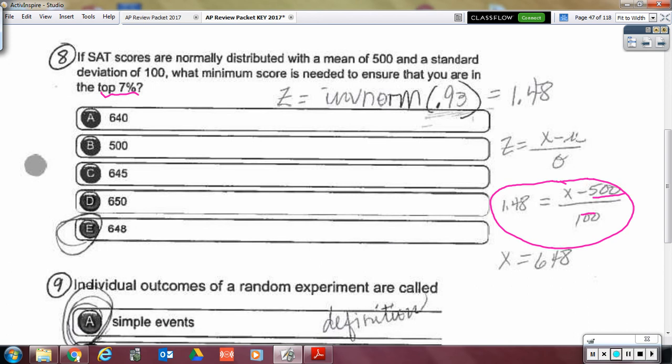Number eight, top 7%. Do we ever get our Z score by, if I did inverse norm of 0.07? That's the bottom 7%. So it is inverse norm of the area below, which is 93%. And then, the score equation to solve for X.